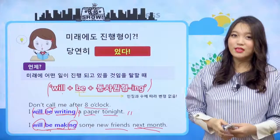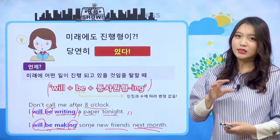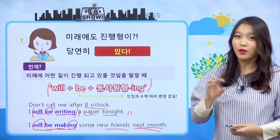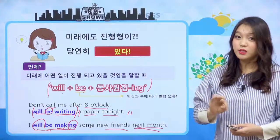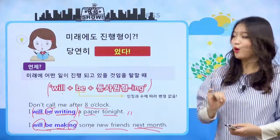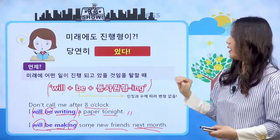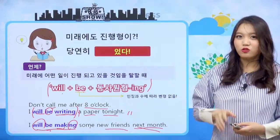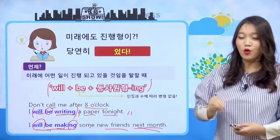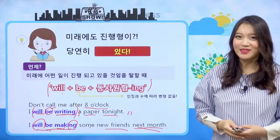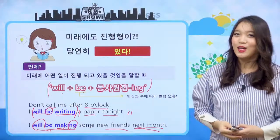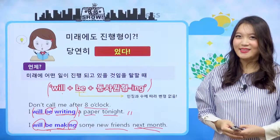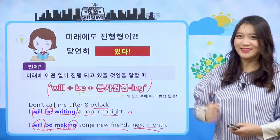우리 친구들 여기까지 해서 정말 많은 우리 시간을 만났어요. 현재, 현재 진행, 과거, 과거 진행, 오늘 미래하고 미래 진행까지 만났는데 우리 친구들 이거 시제 배웠던 거 복습하는 거 잊지 마시고요. 우리는 다음 시간에 웃는 얼굴로 다시 만나요. I'll see you next time. Bye bye.